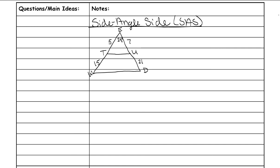Here's an example problem that could be side-angle-side. The first thing you always want to do is draw the triangles separately if they are shown together. On the second triangle, the top angle is still 24 degrees because it's the big triangle by itself. The left side is 15 plus 5, which is 20, and the right side is 7 plus 21, which is 28. Make sure you add the individual sides together to make your bigger triangle.